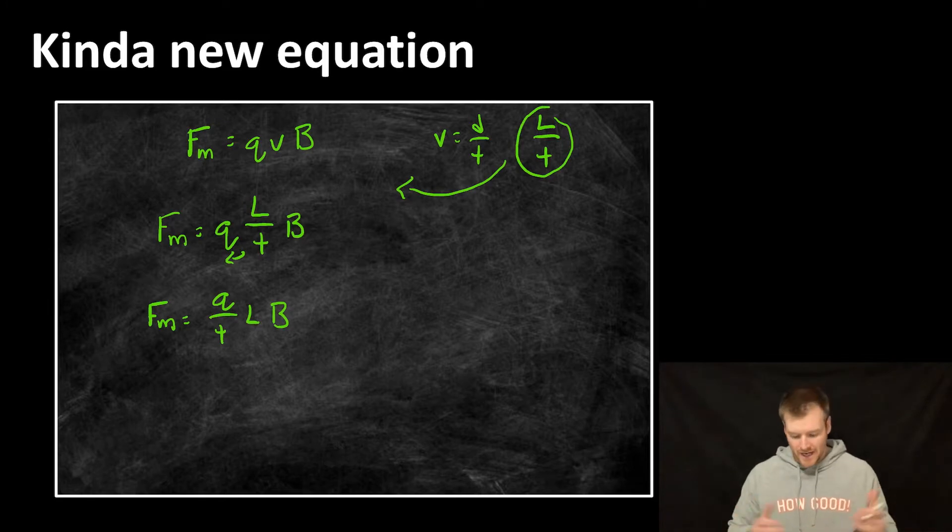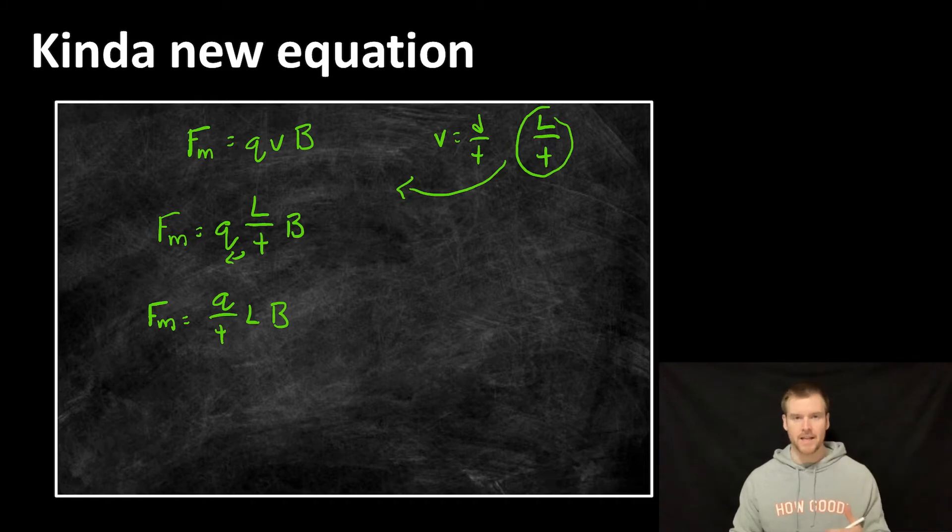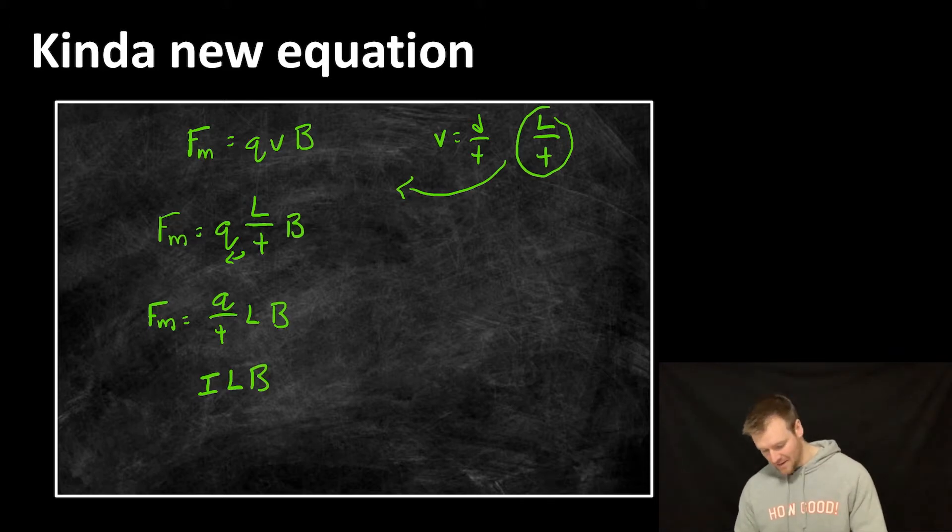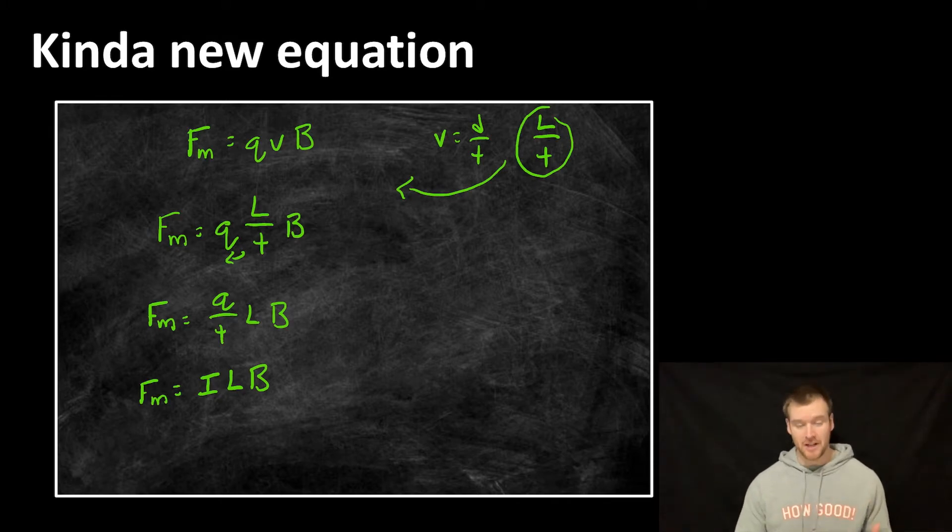Why did I do that? Well, Q over T is Coulombs per second. This is a measure of how much charge is flowing through the wire at what rate. This is current, which is measured in amps, which is Coulombs per second. So now I'm going to replace that with a capital I. I think C was used for speed of light. So we have I for current times the length of the wire times by the magnetic field strength. And that's going to be the equation we use for calculating the force on a current carrying wire.